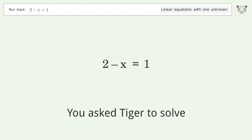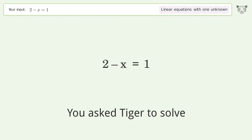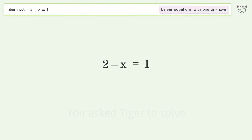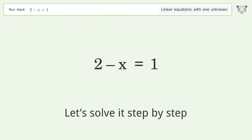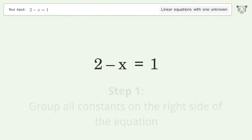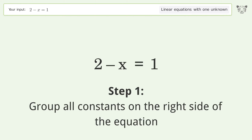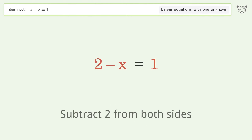You asked Tiger to solve this — it deals with linear equations with one unknown. The final result is x equals 1. Let's solve it step by step. Group all constants on the right side of the equation; subtract 2 from both sides.